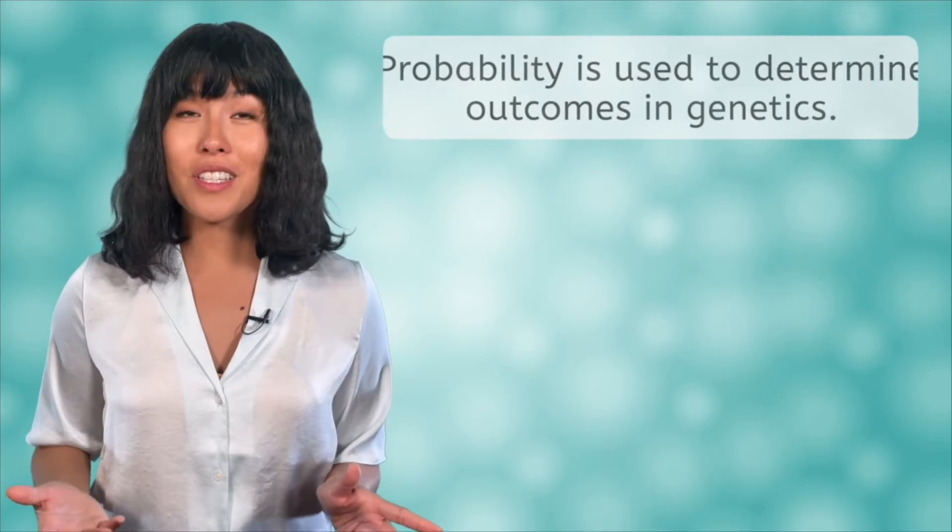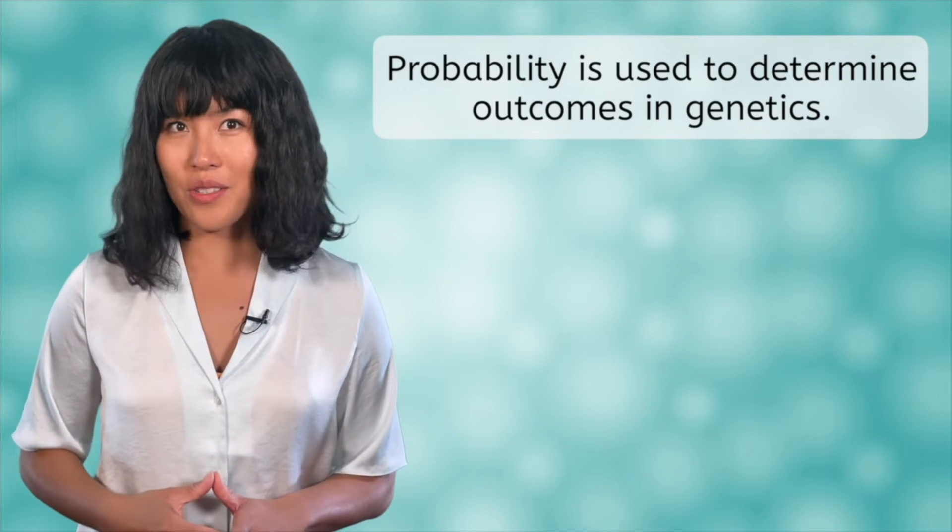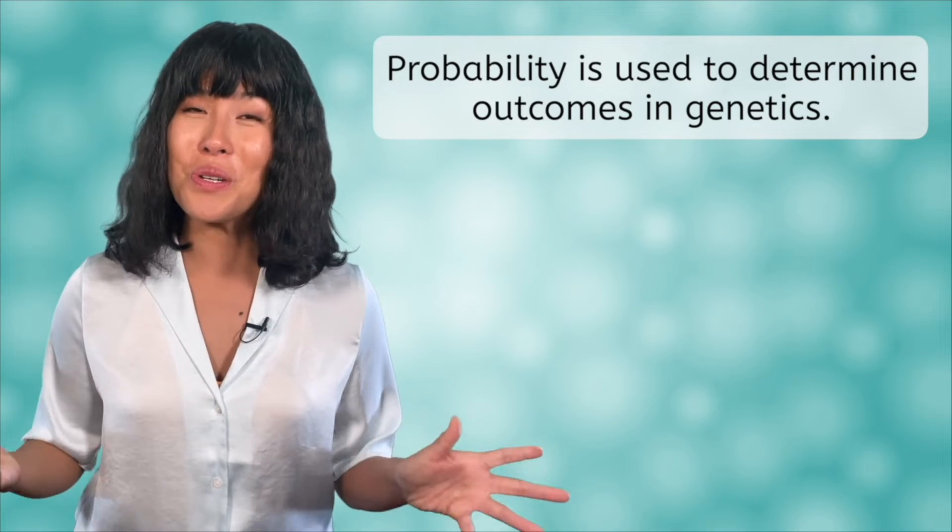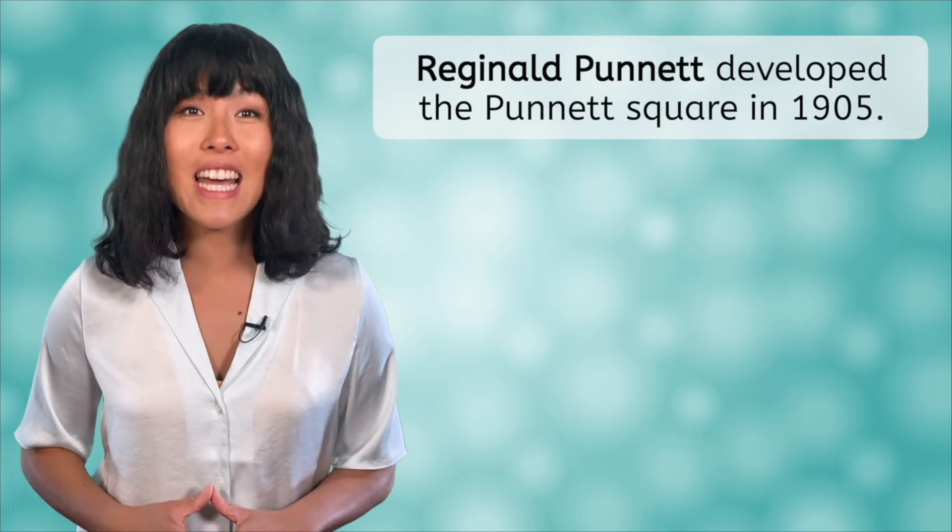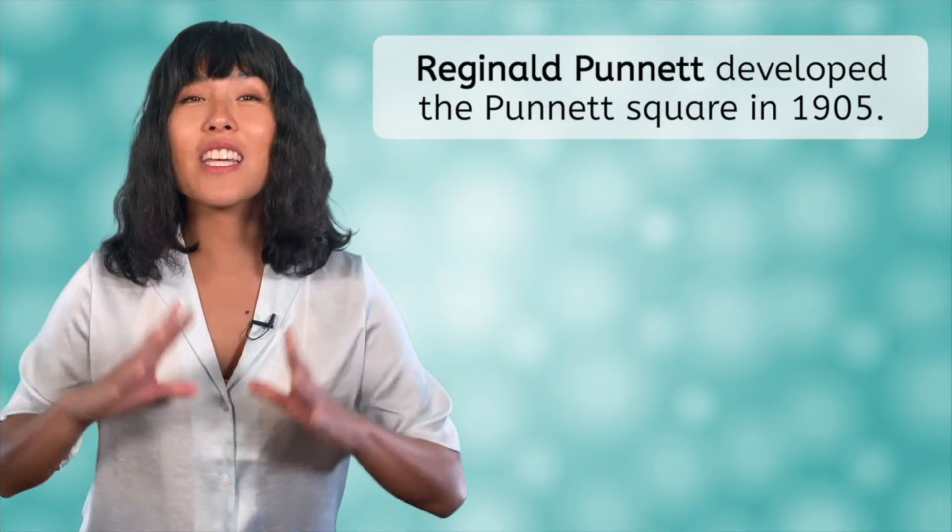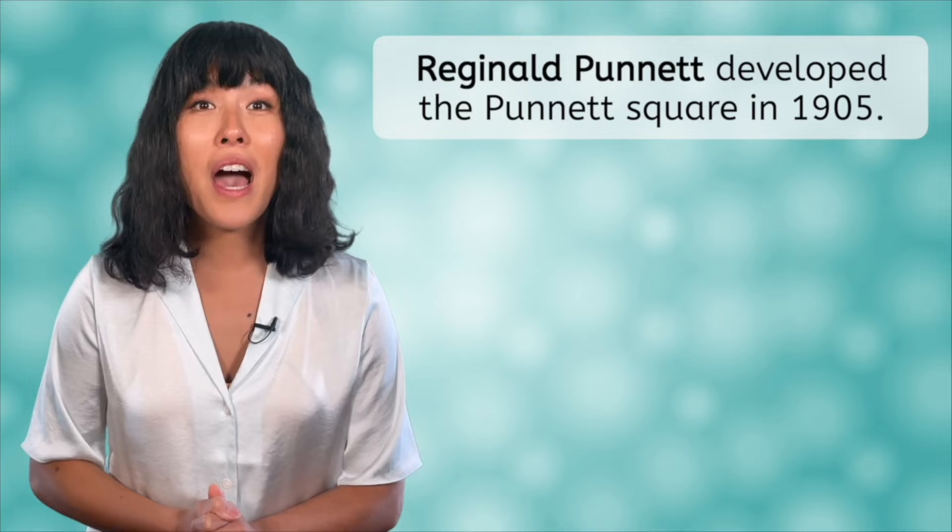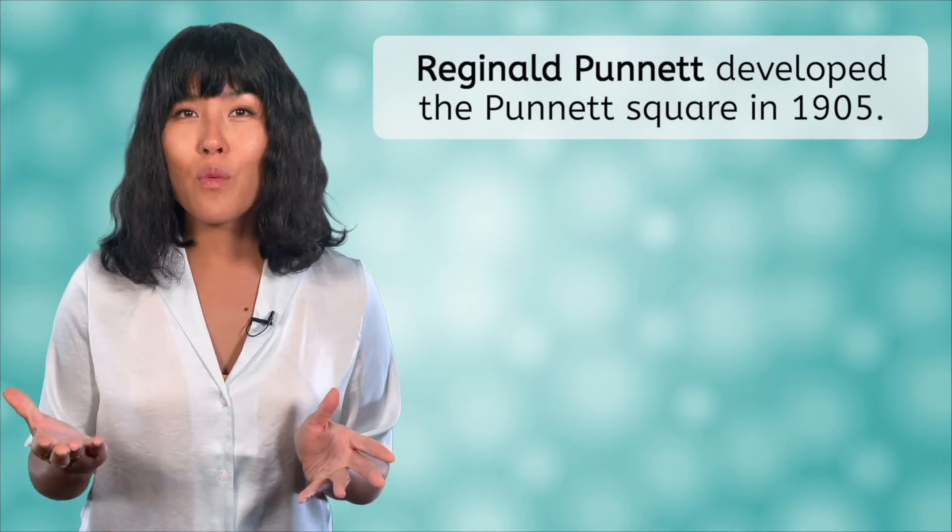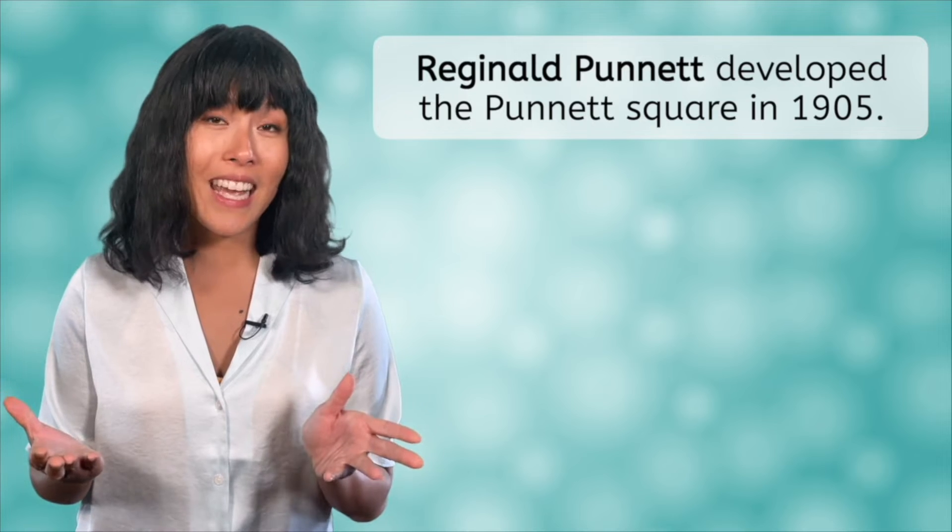These are questions of probability, and it turns out that we use probability to determine outcomes in genetics too. Reginald Punnett, who was one of the first English geneticists, developed a tool in the early 1900s called the Punnett square, so that he could connect his genetics research with what he knew of probability and statistics.